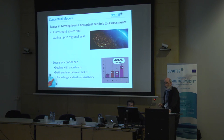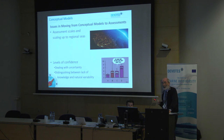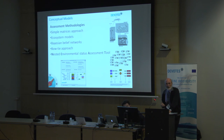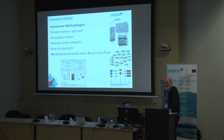Moving up from assessment scales and scaling up to regions: we might know one particular area very well — one little bay where we can see everything — but when we move up it causes problems. We also have levels of confidence in the final assessments and how we deal with uncertainty; Jacob is going to deal with that. For the assessment methodology, a simple matrices approach is very important for data-poor areas. We can also move up to ecosystem models, Bayesian belief networks, bow-tie approaches, or our own favoured nested environmental or sustained assessment tool.